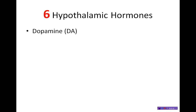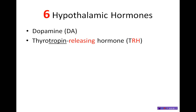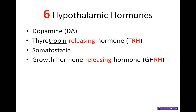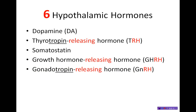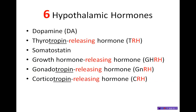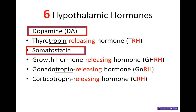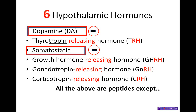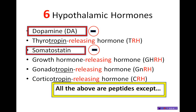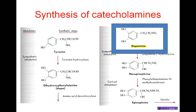There are six hypothalamic hormones, and I'm going to mention them in a specific order for this mnemonic: dopamine, thyrotropin-releasing hormone, somatostatin, growth hormone-releasing hormone, gonadotropin-releasing hormone, and corticotropin-releasing hormone. Notice — this is important — that somatostatin and dopamine are the only two inhibitory hormones in this 12-numbered hormonal set, and it's very important to remember this for the mnemonic. All of the above are peptides or polypeptides, except dopamine, which is a catecholamine.